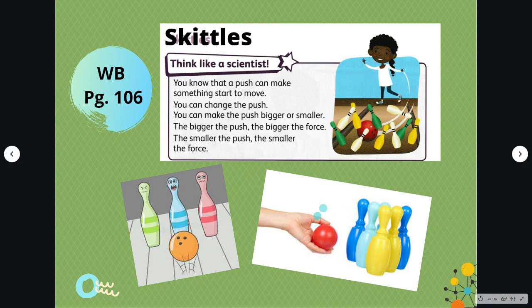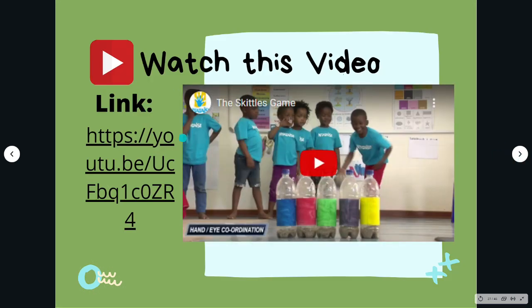This applies in playing Skittles — a game played by rolling or throwing wooden balls down the lane with the aim of knocking over the wooden pins or Skittles. Watch this video: How to play Skittles. This helps children develop their eye-hand coordination.